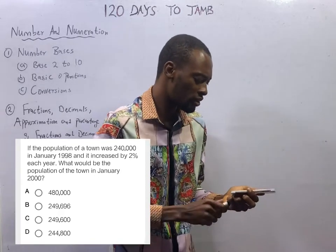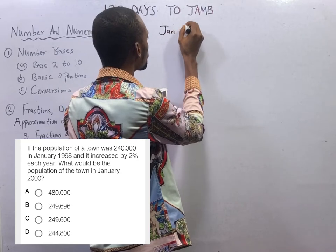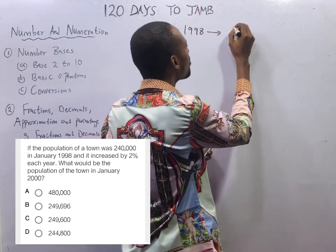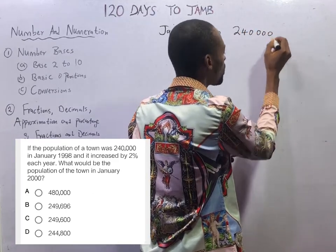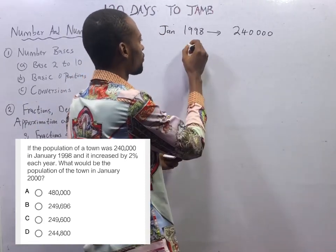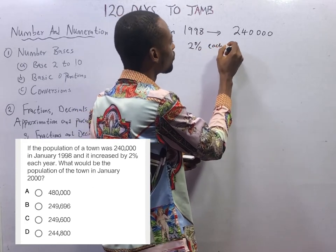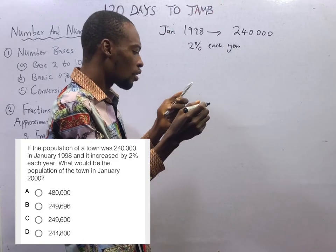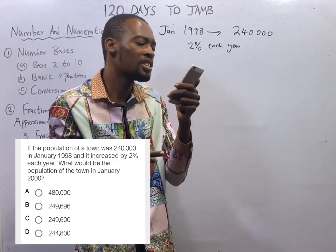Let's break the question down. In January 1998, the population of a town was 240,000, and it increased by 2% each year. What would be the population of the town in January 2000?